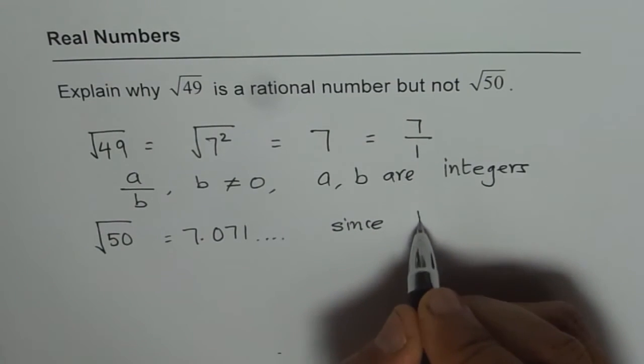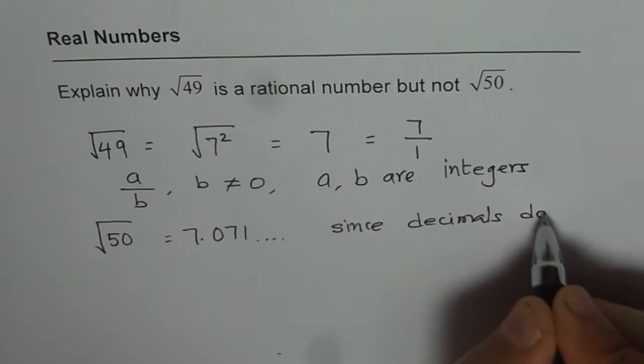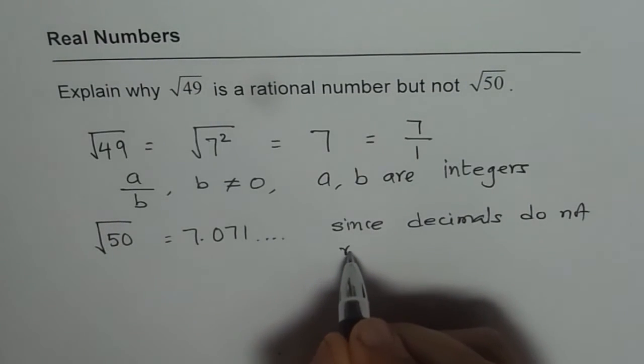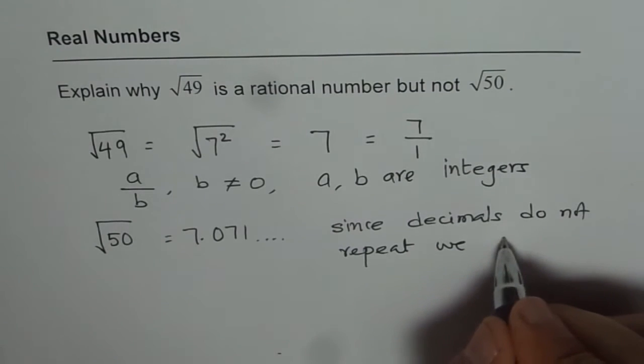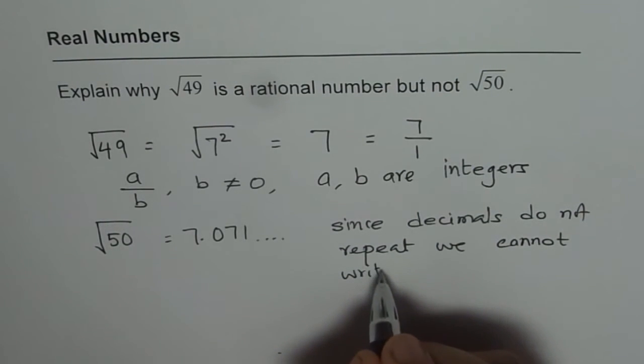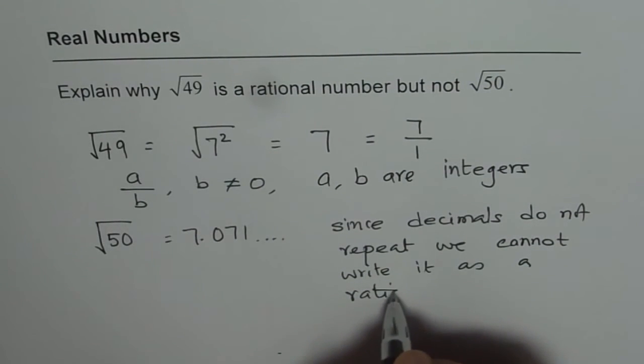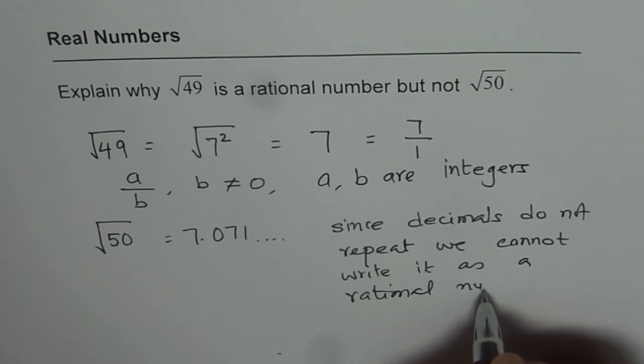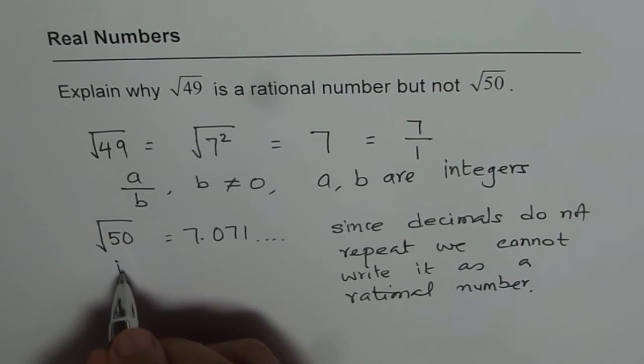Since decimals do not repeat, we cannot write it as a rational number. It is, in fact, an irrational number.